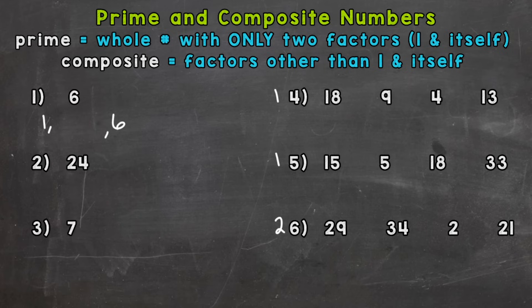Any other numbers that can go into six? Well, I know two and three as well. So this six has factors other than one and itself. We have a two and a three here as well. So it's automatically composite. A prime number will only have one and itself as the factors.